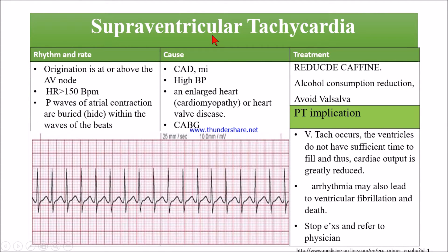Let's see supraventricular tachycardia. The origination is at or above the atrioventricular node. Heart rate will be greater than 150 beats per minute — we can count the small boxes: 300, 150 — so this is greater than 150 beats per minute. The P wave of atrial contraction is buried or hidden within the QRS complex — the P wave is hidden in between the QRS.